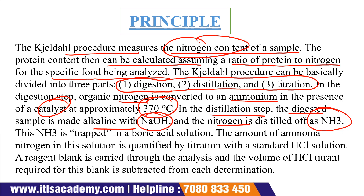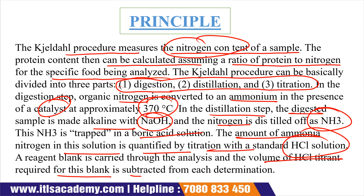The NH3 is trapped in a boric acid solution, and the amount of ammonia nitrogen in this solution is quantified by titration with standard HCl. In the titration step, the ammonia nitrogen is titrated with HCl. A reagent blank is also used, and the volume of HCl required for the blank is subtracted from each determination.